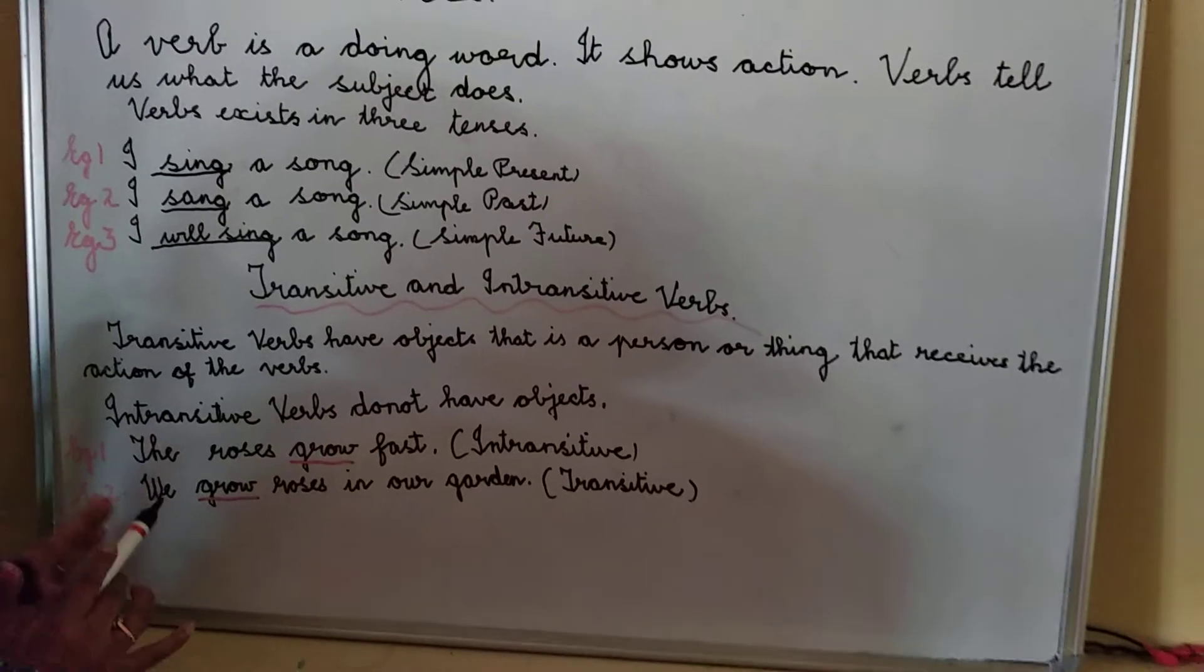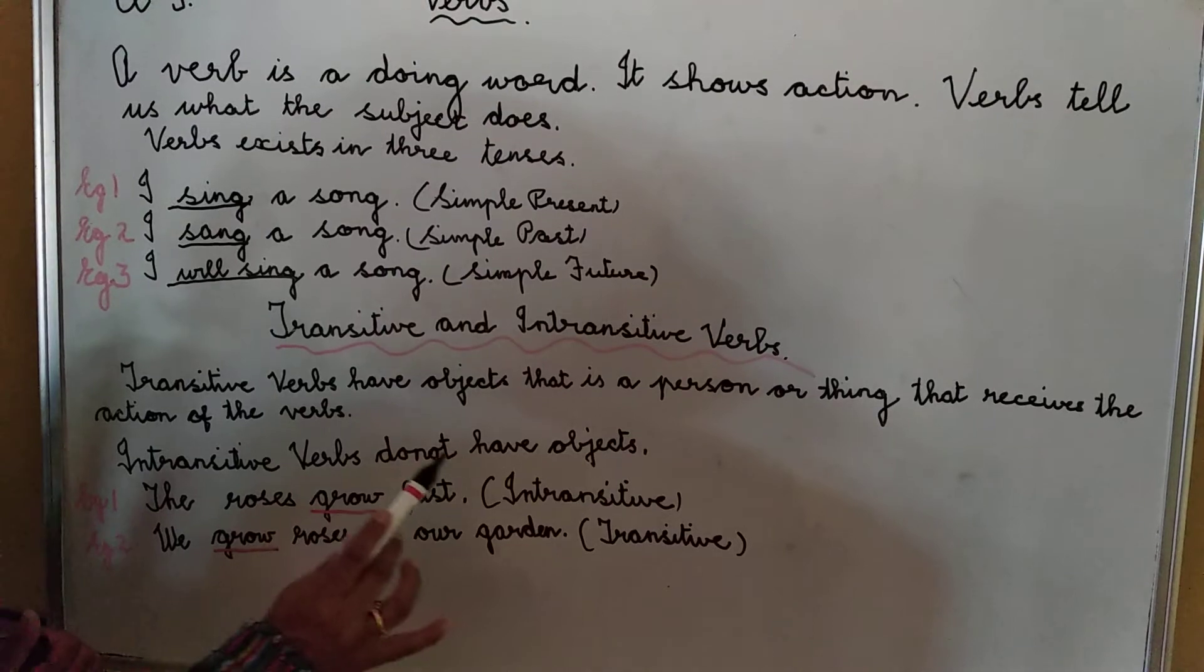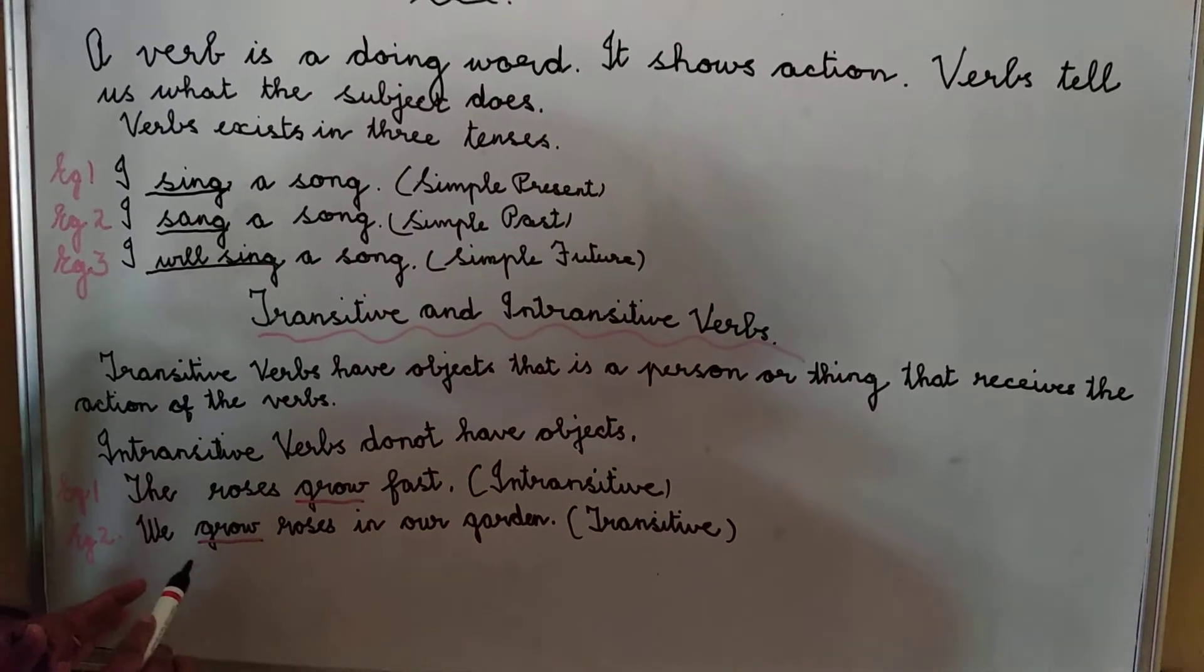In the same way, over here we grow roses in our garden. Now we have the same verb but in one sentence it is intransitive. In the second one it is a transitive verb because what has happened?